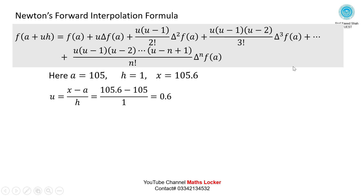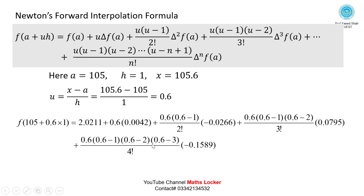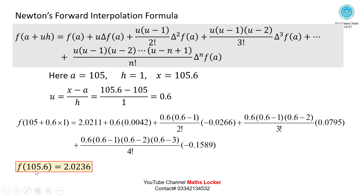Substituting into the formula: f(a) = 2.0211 from the table, u = 0.6, delta f(a) from the forward diagonal, then 0.6(0.6−1)/2! times delta²f(a), then 0.6(0.6−1)(0.6−2)/3! times delta³f(a), and 0.6(0.6−1)(0.6−2)(0.6−3)/4! times delta⁴f(a). After simplifying, f(105.6) = 2.0236.